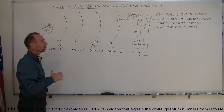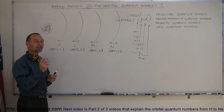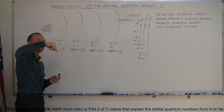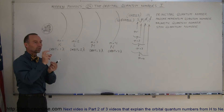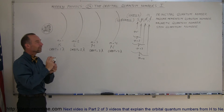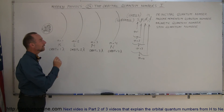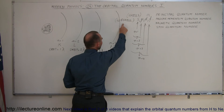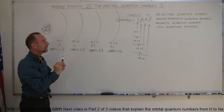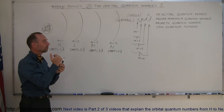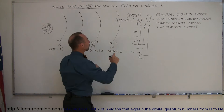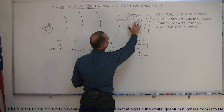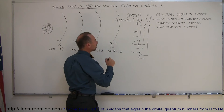In the fourth quantum number, an electron can either be spin up or spin down — it can spin in one direction or flip over and spin in the other direction, which causes it to be in a slightly different energy state. So in each suborbital of a subshell, an electron can be in an up-spin direction or a down-spin direction.